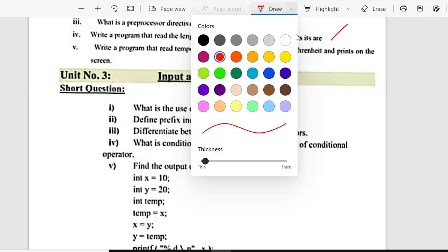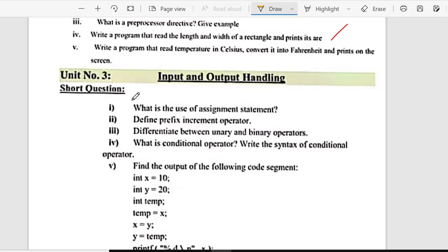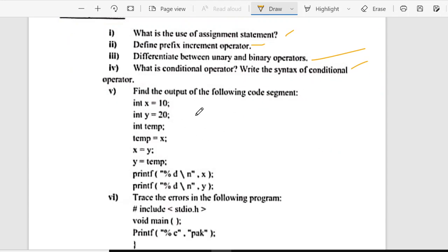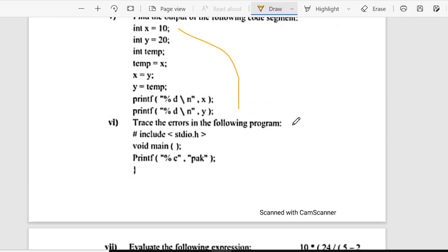Chapter three. Input and output handling. Short questions: what is the use of an assignment statement. Number two, define prefix increment operator. Differentiate between unary and binary operators. Or, what is conditional operator, write the syntax of conditional operator. Fifth is, find the output of the following code. Or, you have a whole code, you have to tell the output. And second is, trace the error.